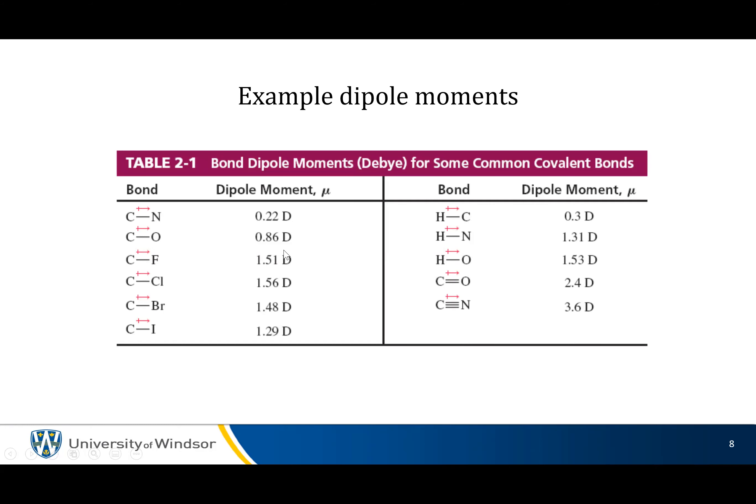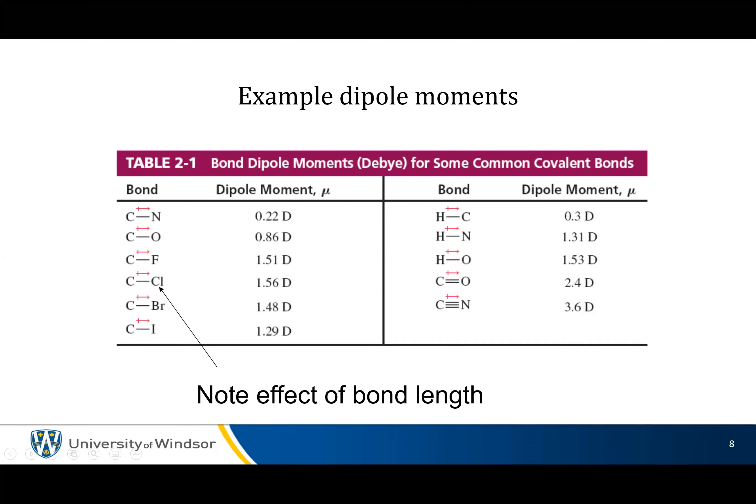If we put some of these into numbers, a carbon-oxygen bond has a bigger dipole moment than a carbon-nitrogen bond. That makes sense — oxygen has a higher electronegativity than nitrogen, so oxygen is pulling those electrons tighter towards it. The carbon is more positive, the oxygen is more negative. You get a much stronger effect with fluorine, and that makes perfect sense because fluorine is more electronegative than oxygen. Fluorine is the most electronegative element.